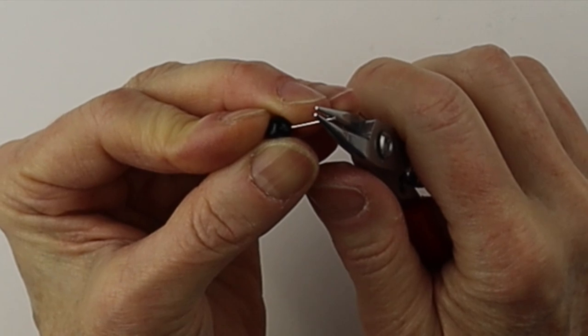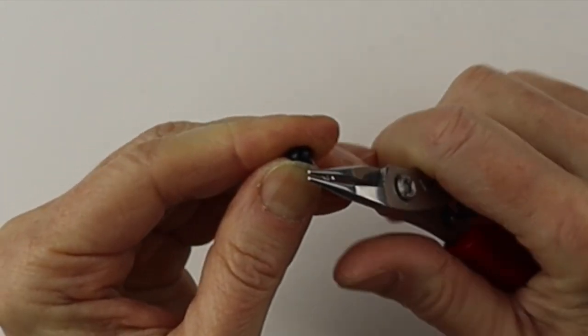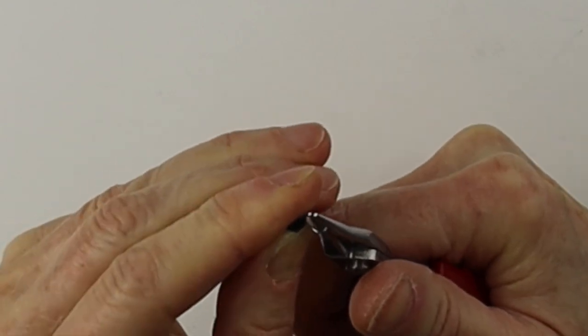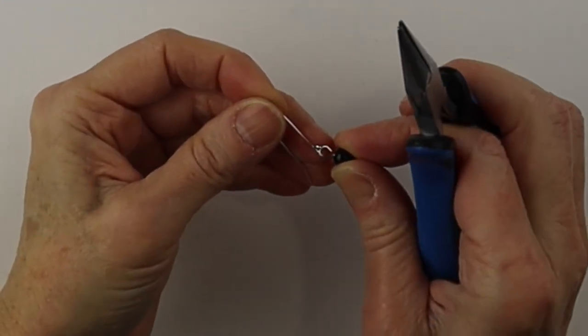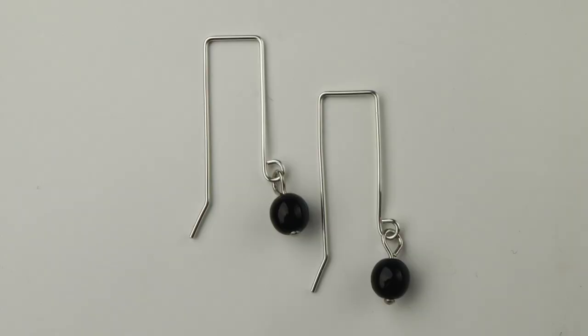Cut this to about three eighths to half an inch. Take your round nose pliers. Push this back and around. Hook the bead onto the earring hook and close it up. And there you have your beautiful rectangular earring hooks with the dangling beads.